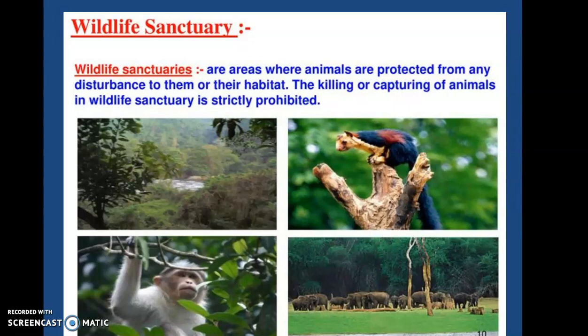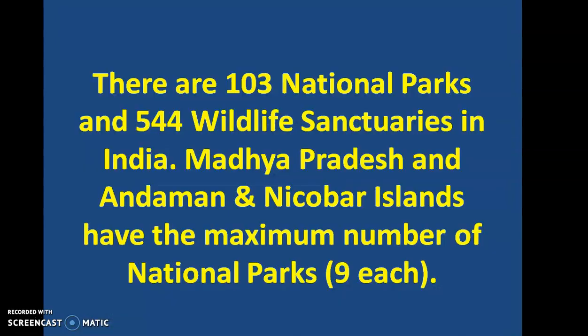As you already know, a wildlife sanctuary is a protected area for animals where no disturbance is created by human activity. No one can harm their habitat, no poaching, no killing. Wildlife sanctuary is different from a zoo — please don't relate them as the same thing. In a wildlife sanctuary, animals live freely in their natural habitat, while in a zoo they are kept in cages.